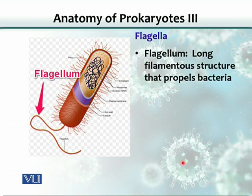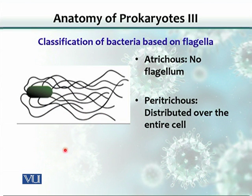Let's talk a little about flagella classification. Flagella can be used for classifying organisms. The flagellum is a long thread, and when it beats the bacteria moves with it. On the basis of flagella, we can classify bacteria: if a bacterium does not have any flagella, we call it atrichous — 'a' meaning not, 'trich' meaning hair — so no hair-like structure.